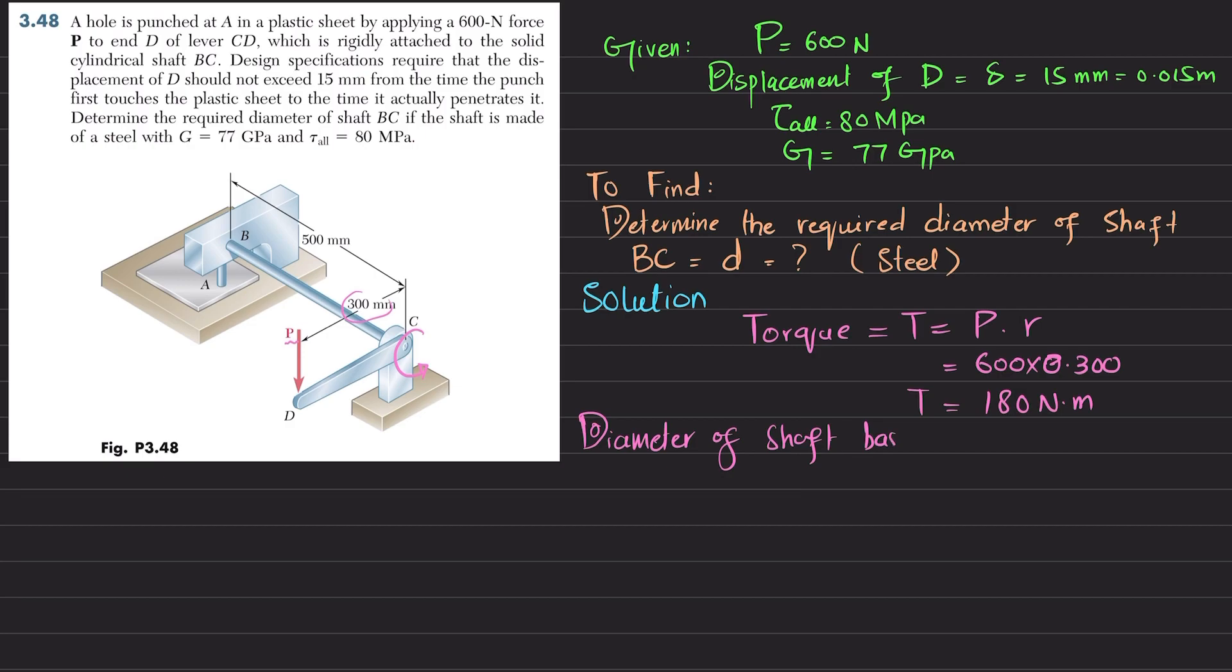You can see this is the original bar CD, and it is given that it will displace 15 millimeters. So this distance is delta, which is 15 millimeters or 0.015 meters, and this lever will come to this position and make angle theta here.